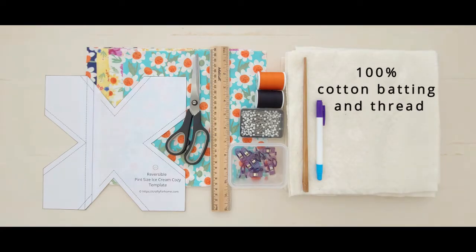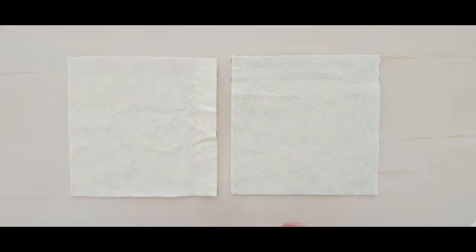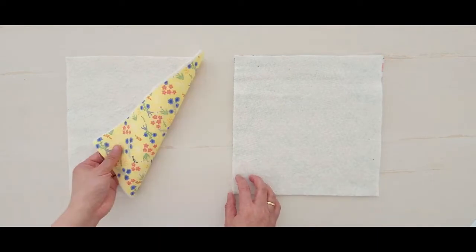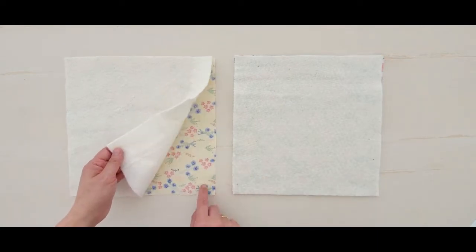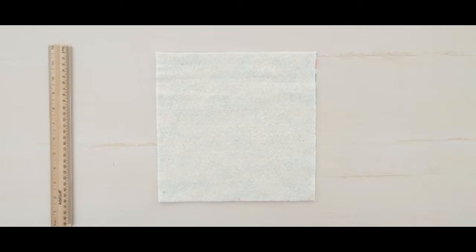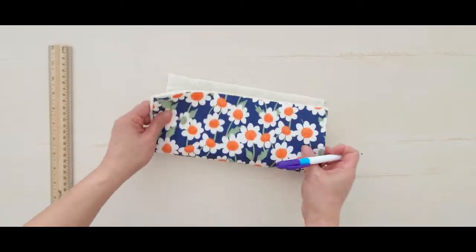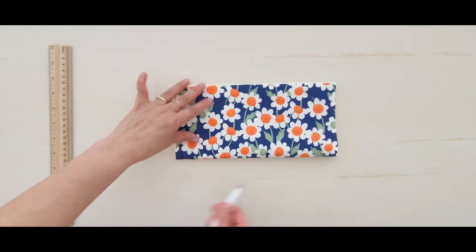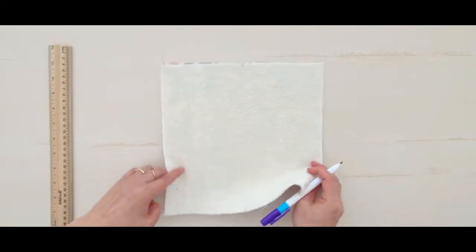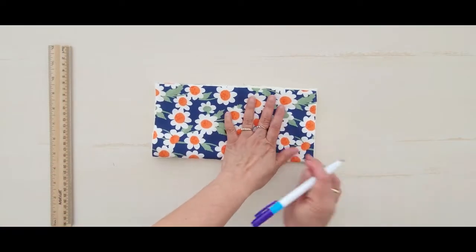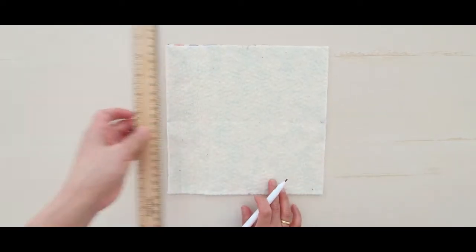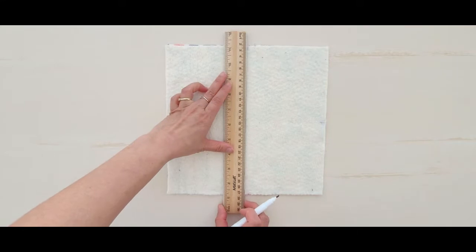If you don't use the ice cream cozy template, then cut the fabric into two pieces of 10 inches square, and also the quilt batting into two pieces of 10 inch square. Layer one square fabric with the wrong side facing up, then put one square batting on top of it, then pin it together or you can use the quilting clips. Fold in half and mark the folding spot.